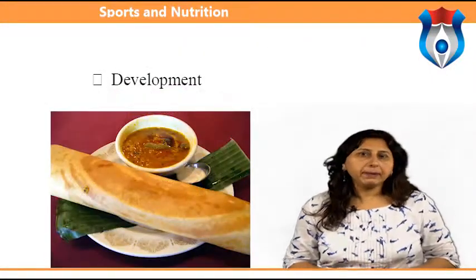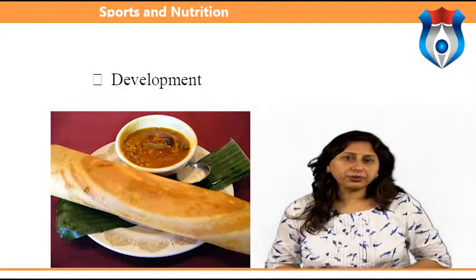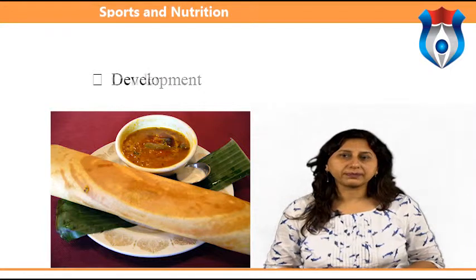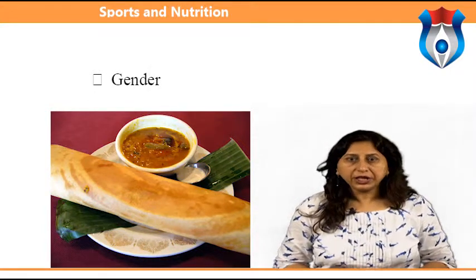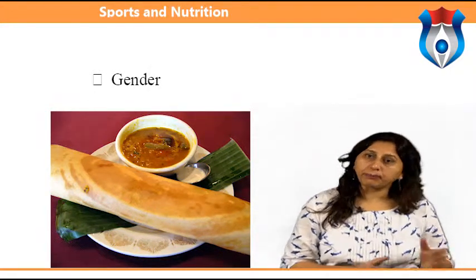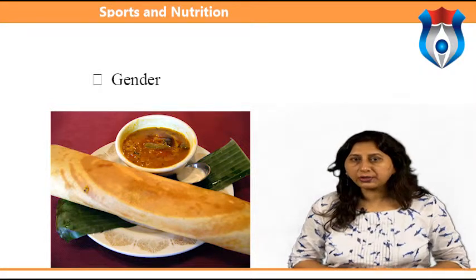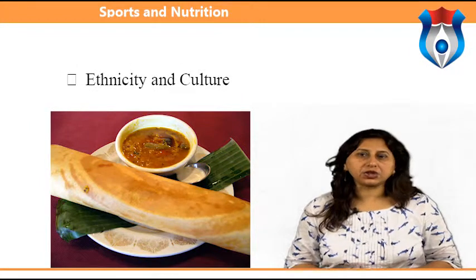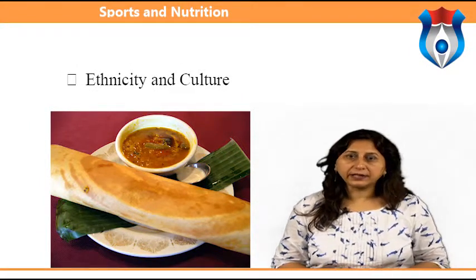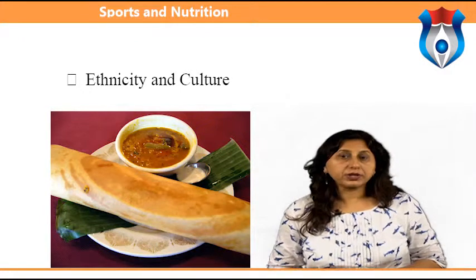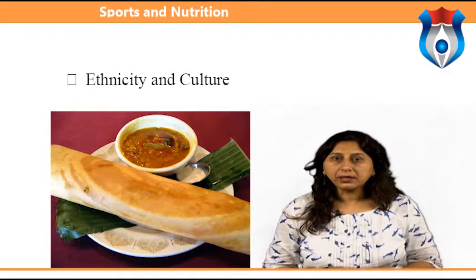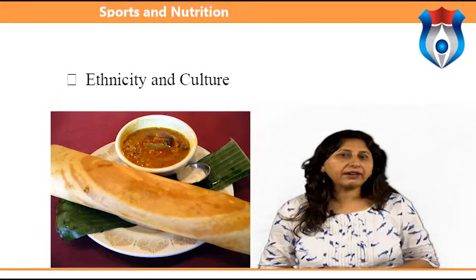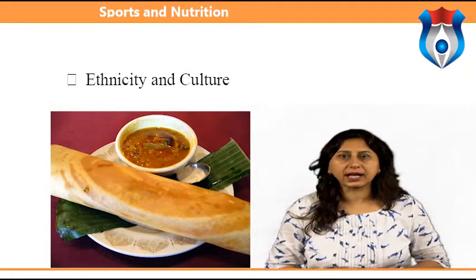Development: people in rapid periods of growth — that is, infancy and adolescence — have increased needs for nutrients. Gender: nutrient requirements are different for men and women because of body composition and reproductive functions. Ethnicity and Culture: ethnicity often determines food preferences — traditional foods such as rice for Asians, pasta for Italians and curry for Indians are eaten long after other customs are abandoned.